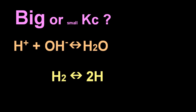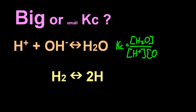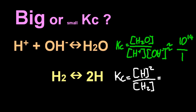What about these — big or small Kc? Writing out the equilibrium constant, that is an enormous value for Kc. Why? Positive and negative ions attract each other — electrostatic attraction — so they're much more likely to be attracted to each other than to be formed from a water molecule spontaneously dividing. And for the second one, Kc is very, very small. The hydrogen bond is quite strong and the chance of it just spontaneously breaking is extremely small.